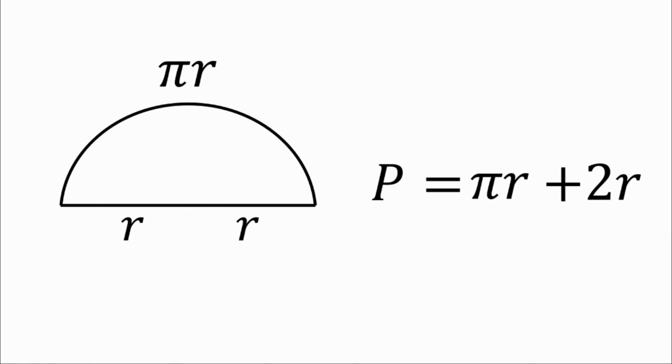This would be equal to the perimeter. So we now know that the perimeter of a semicircle is simply πr + 2r.